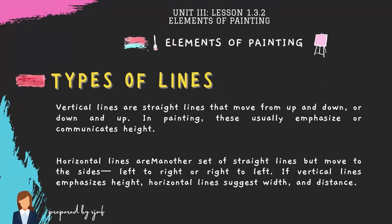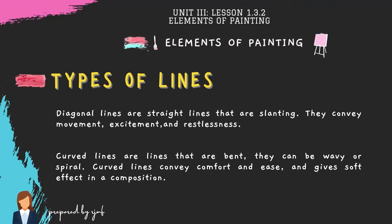Types of lines: Vertical lines are straight lines that move up and down, and in painting, these usually emphasize or communicate height. Horizontal lines move to the sides — left to right or right to left — and suggest width and distance. Diagonal lines are slanting straight lines that convey movement, excitement, and restlessness. Curved lines are bent lines that can be wavy or spiral; they convey comfort and ease and give a soft effect in a composition.